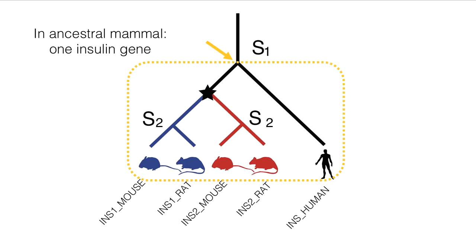There was only one copy of the insulin gene in the ancestor of all mammals, so all insulin genes in mammals are derived from it and should be in one HOG. This includes the human insulin gene. In terms of orthology and paralogy relationships, a HOG contains orthologs and in-paralogs.